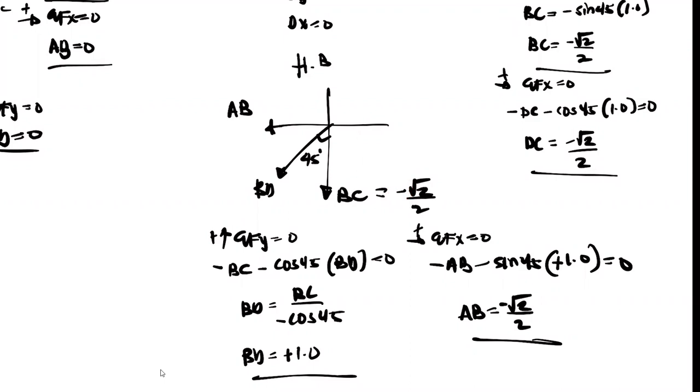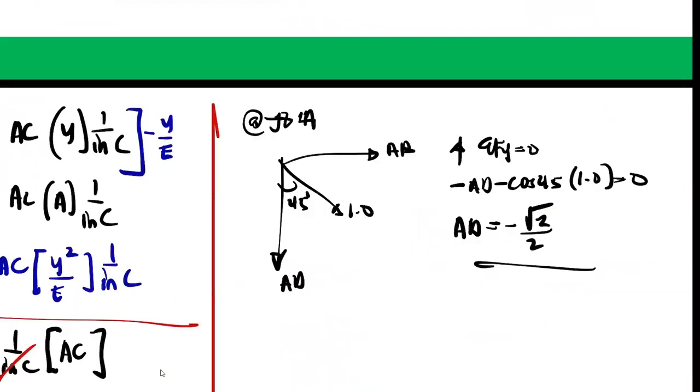So that's why I need to not change the value of BD into positive. And then if this is positive, the sine 45 BD should be positive also. Okay, positive 1.0. So when we move AB to the other side, that will be negative square root of 2 over 2. Okay, and then continue.